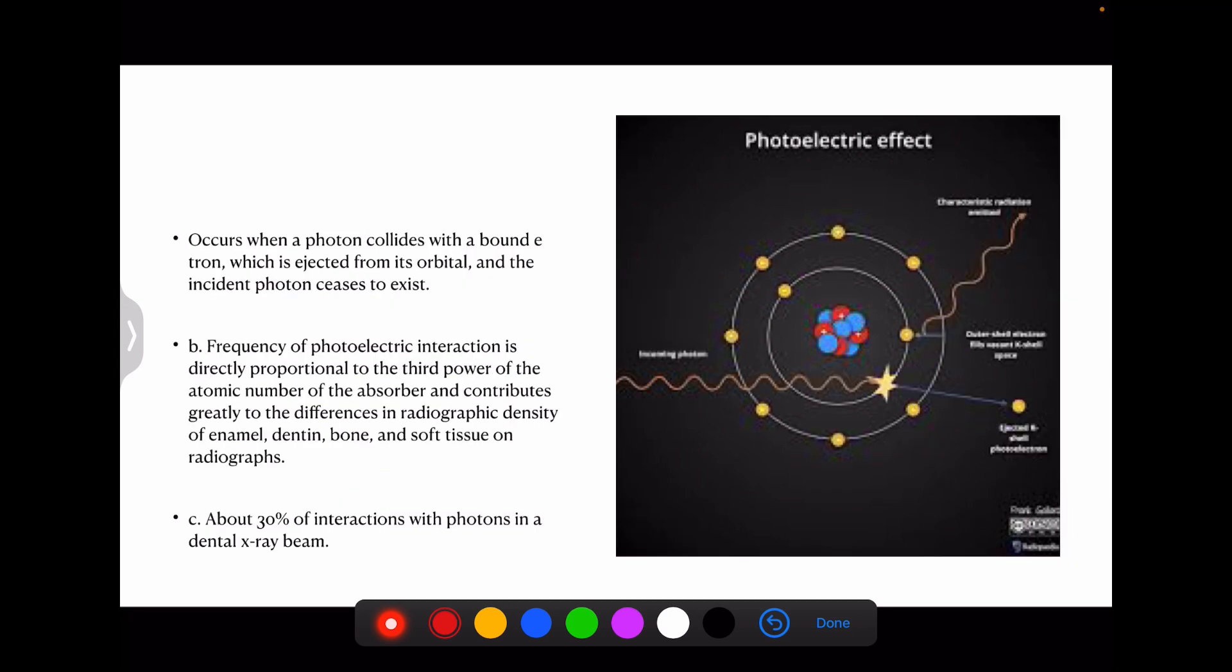Then coming to the photoelectric effect. Photoelectric effect occurs when a photon collides with a bundle of electron which is ejected from its orbit and the instant photon ceases to exist, as you can see here. The frequency of photoelectric interaction is directly proportional to the third power of the atomic number of the absorber, contributes greatly to differences in radiographic density. So this interaction is basically 30%.